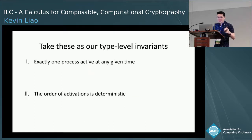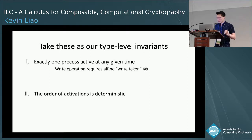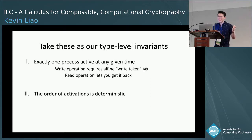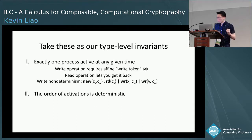We take these invariants of ITMs and turn them into type-level invariants. To enforce that exactly one process is active at any given time, in order to perform a write operation a process must own what we call an affine write token, and when a process performs a read operation they get it back. Processes implicitly pass around this affine write token by virtue of where the read and write effects are. Because the write token is unique, programs with two writing processes don't type-check, effectively eliminating write non-determinism.